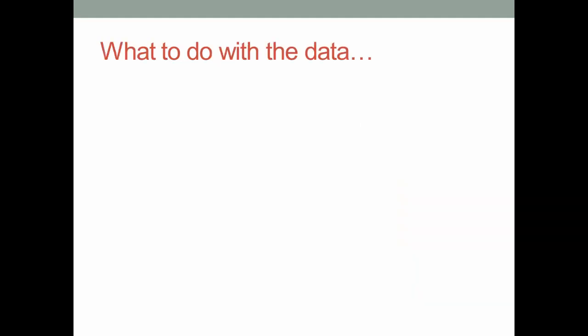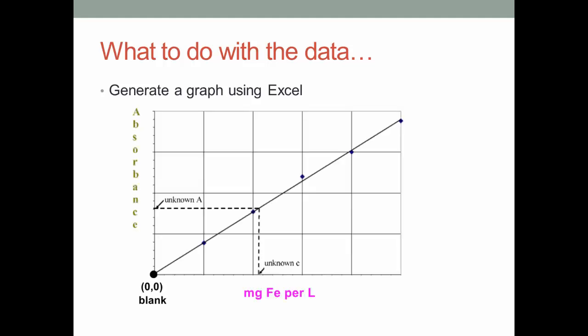Once the experiment is done and you have your data, you will generate a graph using Excel. The graph will look something like this: a plot of absorbance versus milligrams of iron per liter. Using your standard solutions, you will make a calibration curve, and from that, using your unknown absorbance, you can extrapolate the unknown milligrams of iron per liter, as shown by the dashed line on the graph.